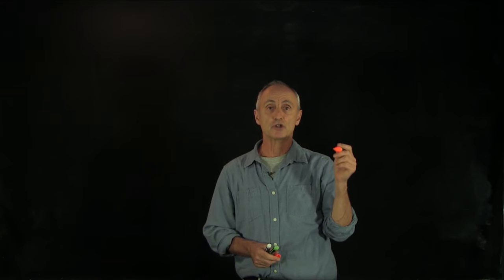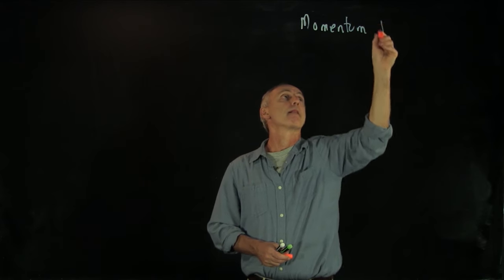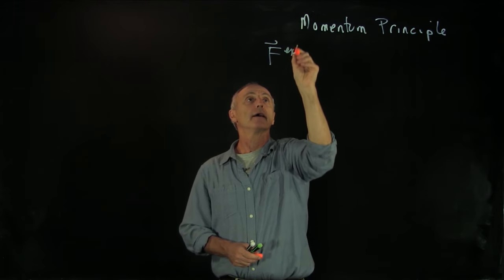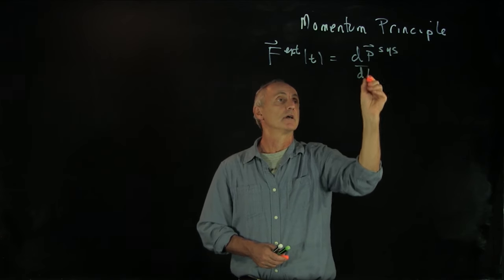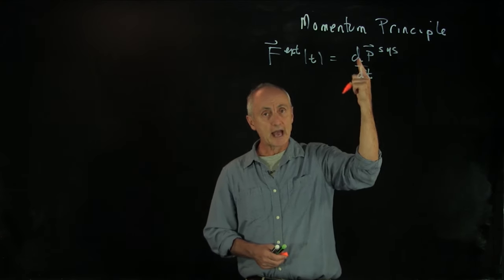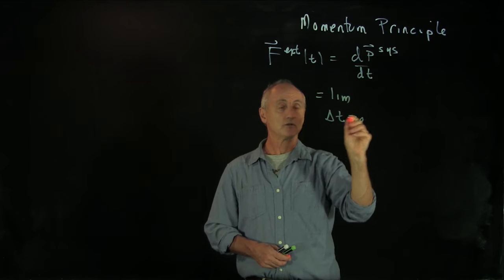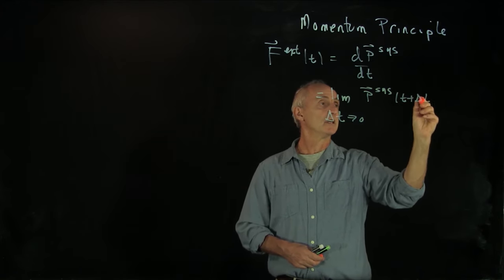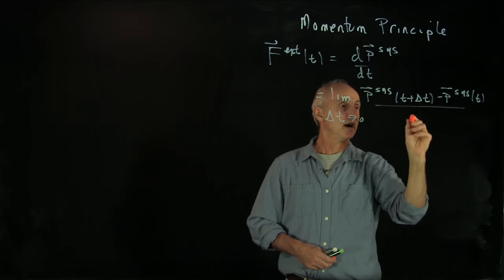We would now like to apply the momentum principle to analyze the motion of the rocket. The external force at time t is equal to the rate of change of the momentum of the system over t. We're going to use the formal definition of a derivative to write this as a limit as delta t goes to 0 of the momentum of the system at time t plus delta t, minus the momentum of the system at time t, divided by delta t.